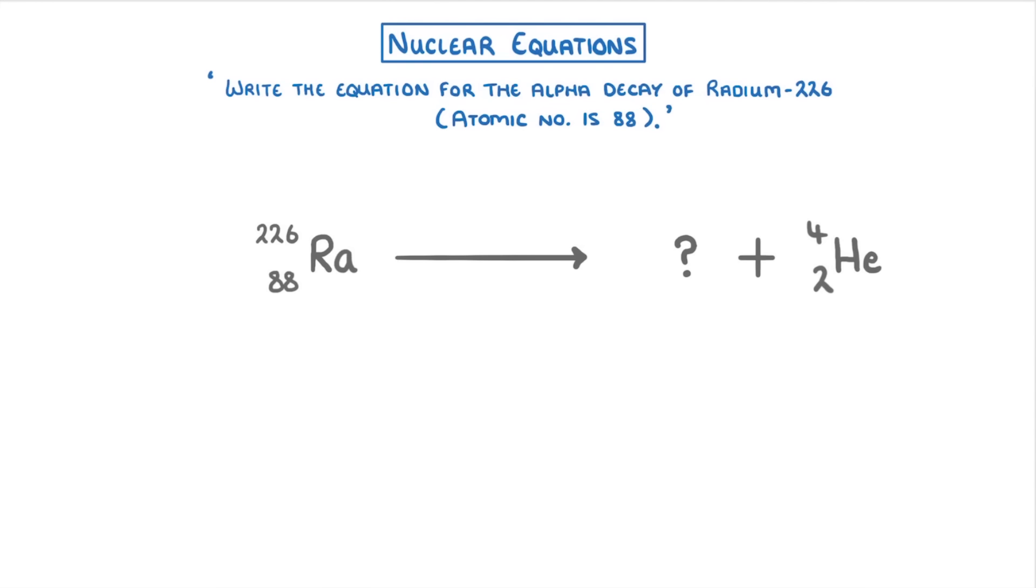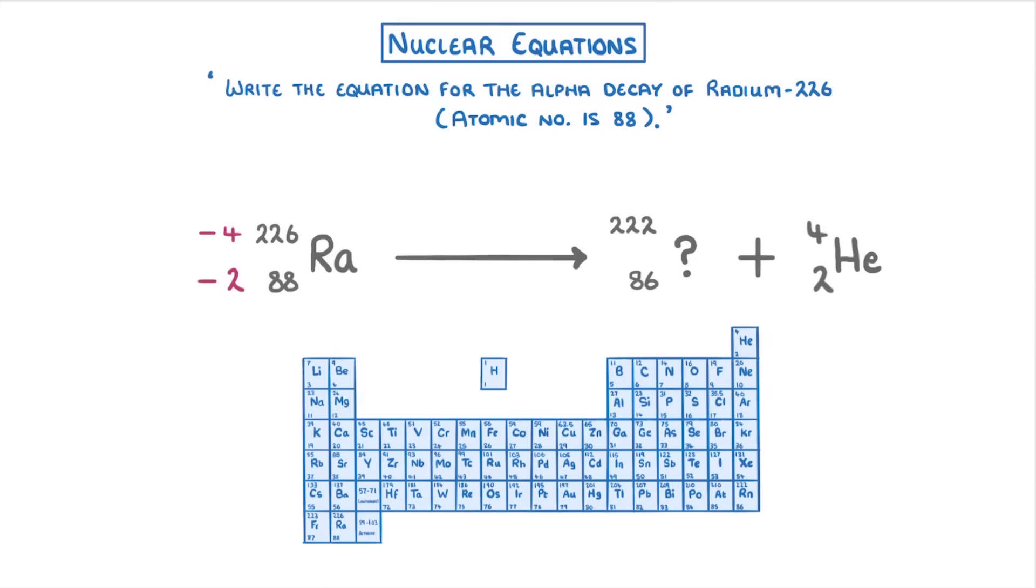Then to figure out what our decay product is, we subtract 4 from the 226 to get a mass number of 222, and minus 2 from the 88 to get an atomic number of 86. Then all we have to do is check the periodic table to figure out what element it is. So in this case, radon.